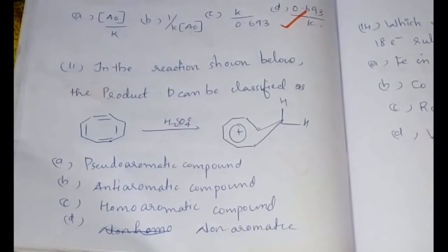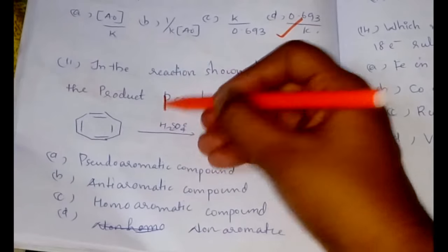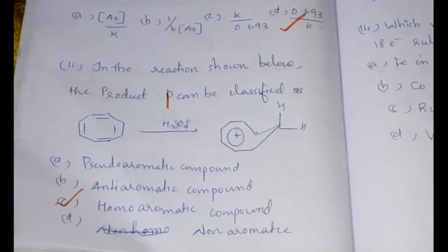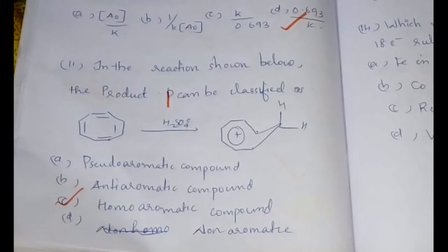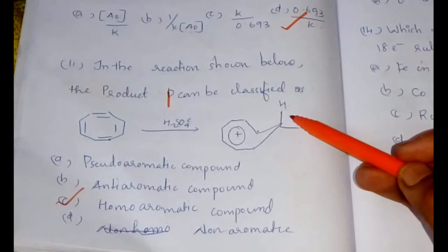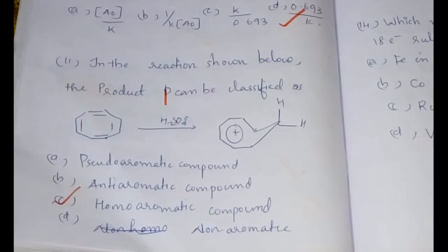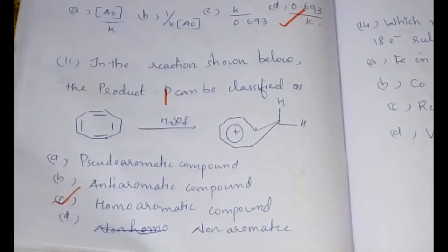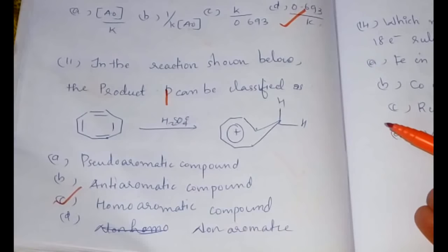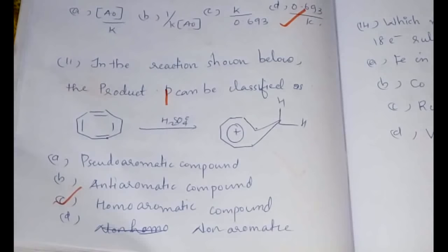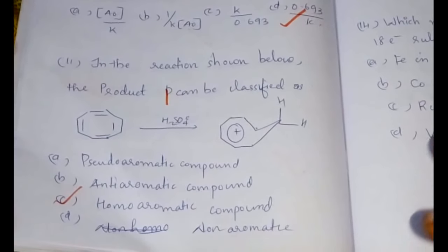The next question: I don't know how many of you know about this idea, but in the reaction shown below the product P can be classified as a homoaromatic compound. This is typically an example of a homoaromatic compound. As I said, in a homoaromatic compound there will be one sp3 hybridized carbon atom lying above the plane, and the remaining portion of the particular compound will be aromatic. Therefore, without that sp3 it should be an aromatic compound. This cyclooctatetraene is one of the basic examples.